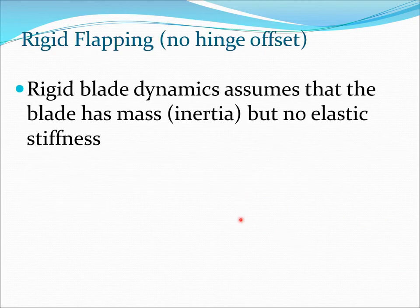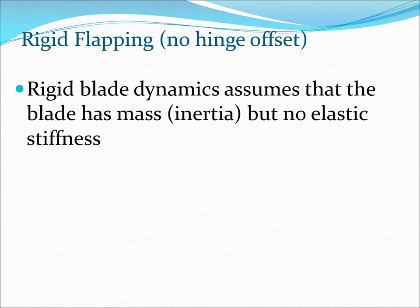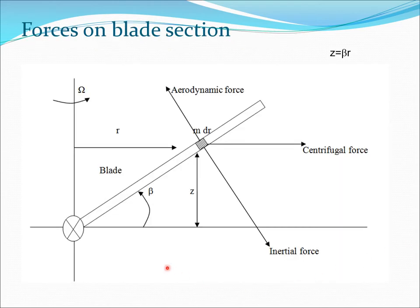Rigid blade dynamics means that we consider the mass of the system but essentially there is no stiffness in the system. That is what is known as rigid blade motion. So let us look at a schematic of the typical rigid blade.